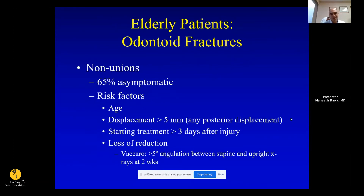When patients get a non-union, about 60 to 70 percent are asymptomatic. Risk factors for non-union include older age, osteoporosis, displacement greater than 5 millimeters, delayed treatment, and posterior displacement. Viccaro's study showed that in patients with a halo or cervical collar, if at two weeks there was greater than 5 degrees of angulation or 2 to 3 millimeters of displacement on supine and standing X-rays, there was a higher risk of treatment failure. You can convert to surgery early if you're following X-rays and see displacement.